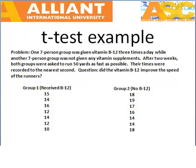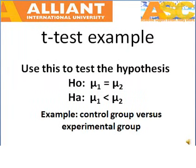First thing you've got to do in this problem, like all problems, is write the null hypothesis, which basically states the same thing no matter where it's being used: there is no difference between the means of the groups. The alternative hypothesis states that yes, there was a difference between the groups — in fact, one was faster than the other.